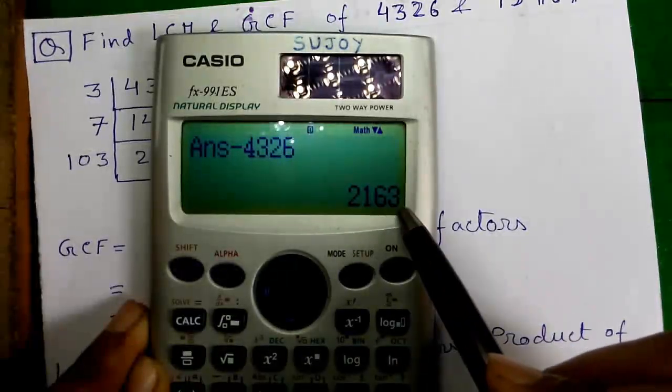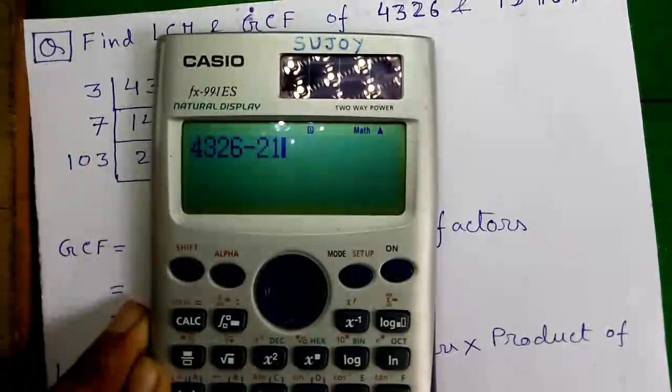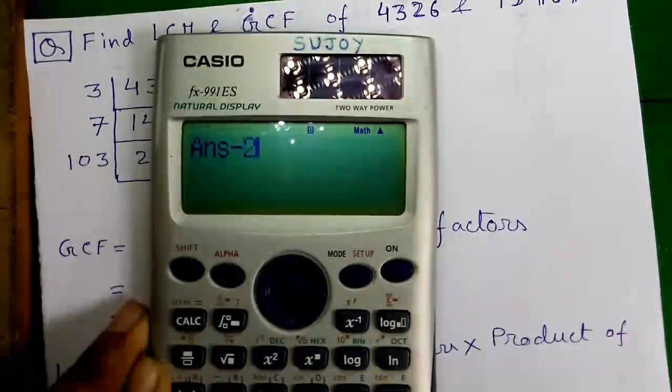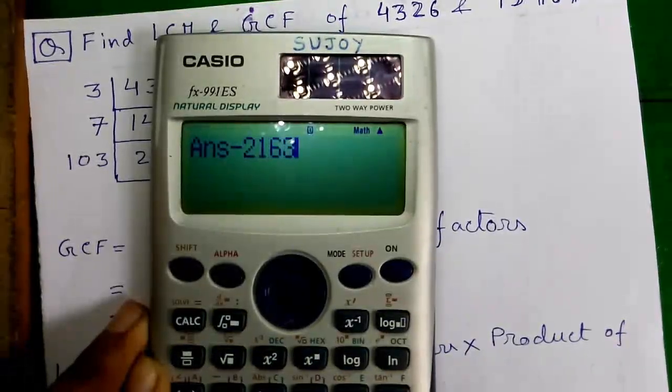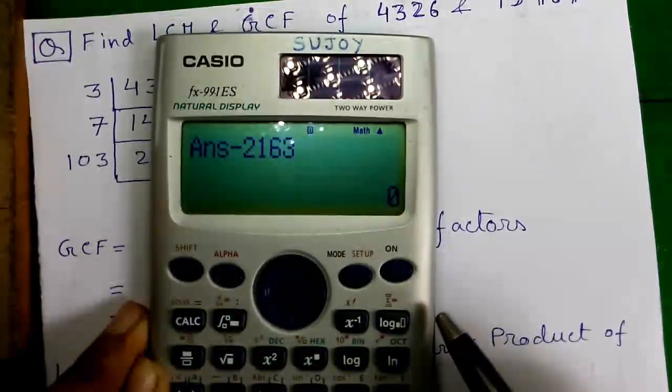And now since this value is larger and this value is smaller, this will become A and this will become B. So we will do 4326 minus 2163. Press equals button, press answer minus 2163, and continue the operation until you get a minus or a zero.